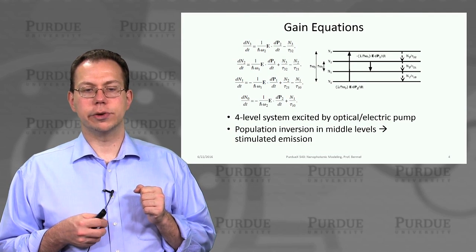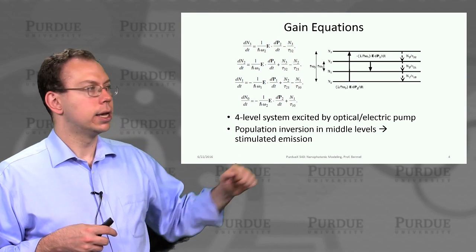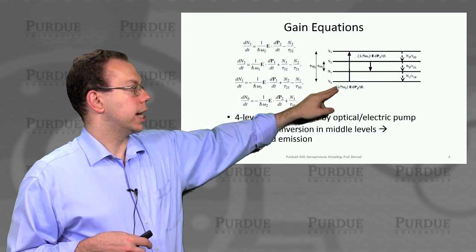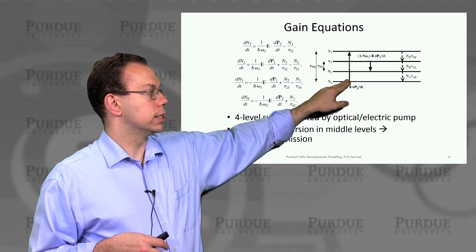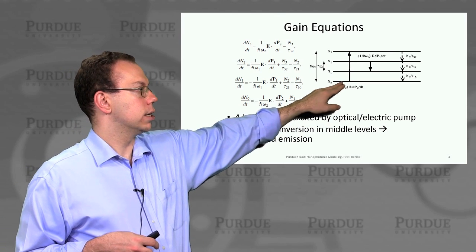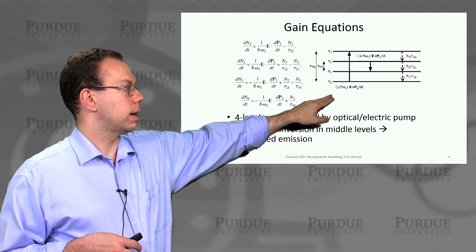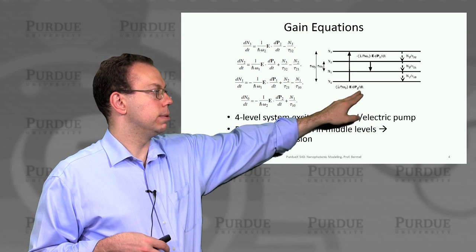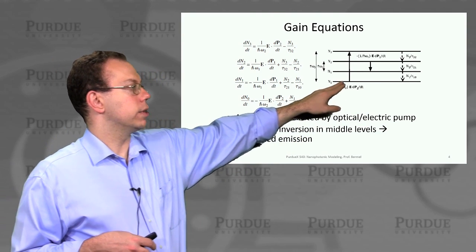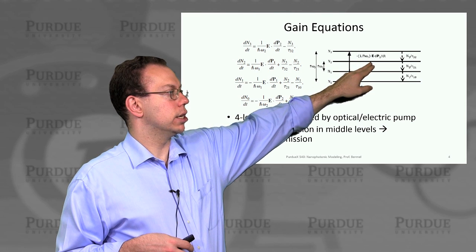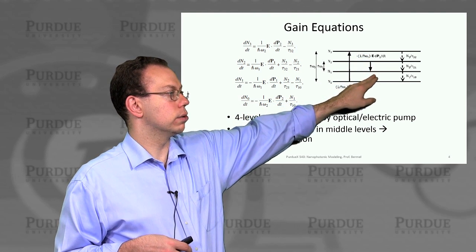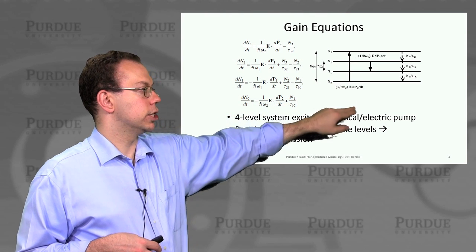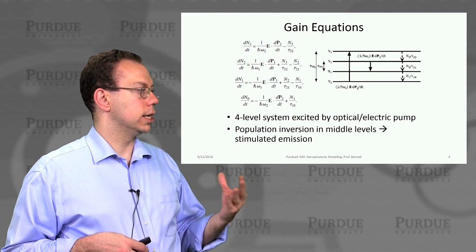Here are the equations we're going to use to simulate all this, essentially adopted from the set of equations discussed earlier. We have a pump transition going from state zero to state three, and this transition depends on the relative populations of state zero and state two, tracked by the polarization term dp2/dt. We also have spontaneous emission and non-radiative transitions from three to two, two to one, and one to zero, plus a relatively strong stimulated emission as we go from two to one — that's the laser transition.